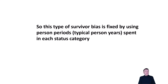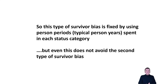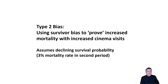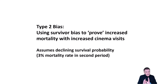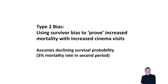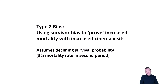But even this doesn't avoid the second type of survivor bias. The second type enables us to prove that you get increased mortality with increased cinema visits — so in this case cinema visits are bad for you. The difference is the realistic assumption that, especially in an ageing population, there will be a declining survival probability over time. So in the second period, the probability of surviving — for those who already survived the first period — is actually lower. If survival probability is lower, the mortality rate is higher: we're going to assume a 3% mortality rate in that second period.